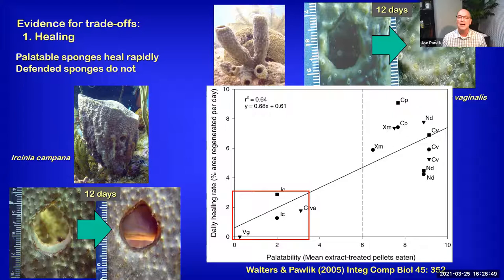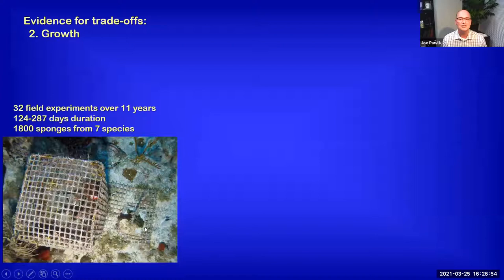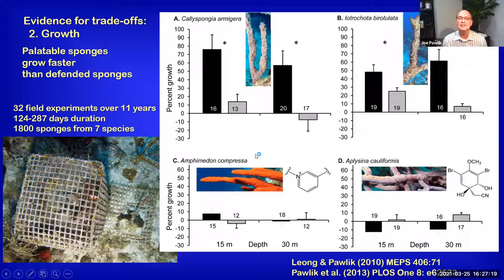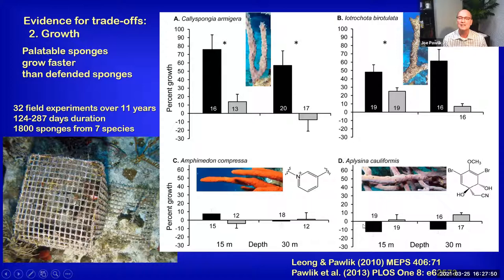We also looked at growth. For these experiments we used rope-shaped sponges that we could chop up into pieces, put out on the reef inside and outside of cages, and look at their relative growth over about a year. We ran these experiments over the course of 11 years with 32 different field experiments. Rope-shaped sponges that are chemically undefended had really rapid growth rates inside cages, considerably slower outside because they're being grazed by spongivorous fishes. The chemically defended species showed very little growth whether inside or outside the cages — clearly faster growth rates among the palatable sponges.